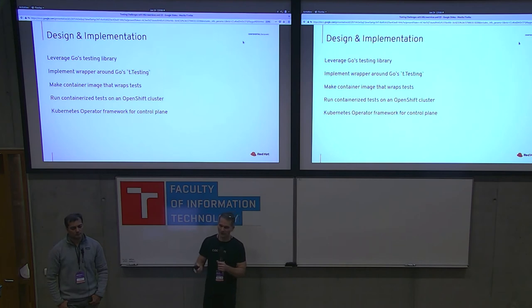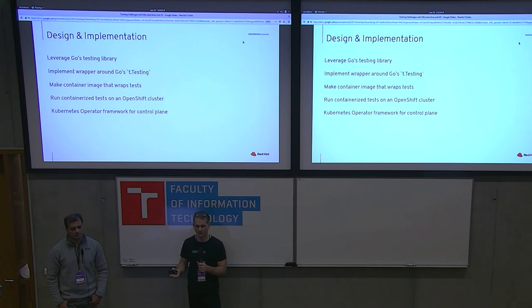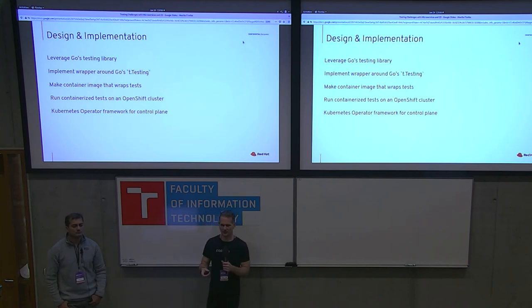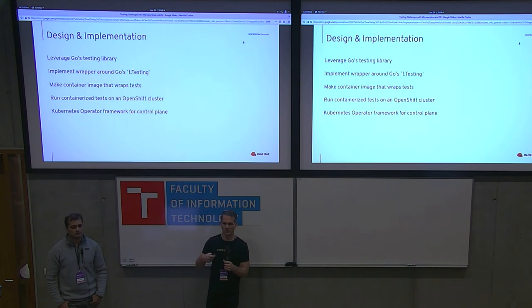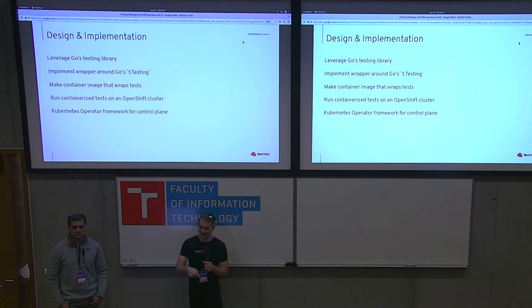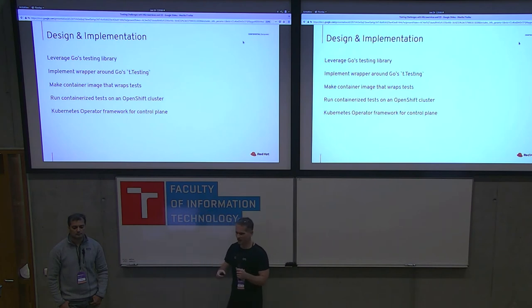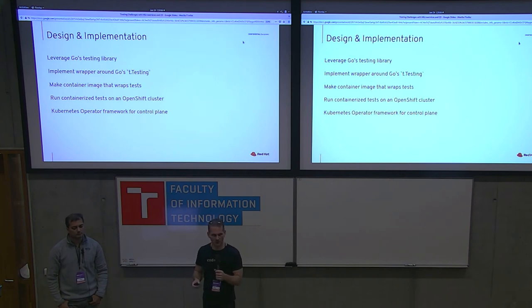So how do we do it? First, we leveraged the Go testing library to keep things familiar and reuse what's already built. However, we need to invoke the tests differently — if you consider that Go test is just the command line interface to the testing library, similar to RSpec or JUnit, we needed to wrap the tests ourselves so we could invoke them ourselves. Once we can invoke them ourselves, we can make a container that wraps and runs those tests. Once we have a container for our tests, we can run them on an OpenShift cluster. We're using the Kubernetes operator framework as the control plane to run these tests.